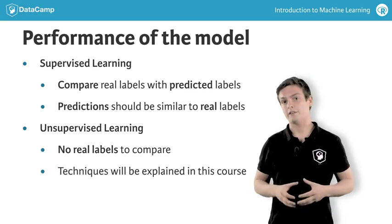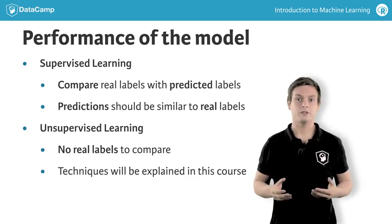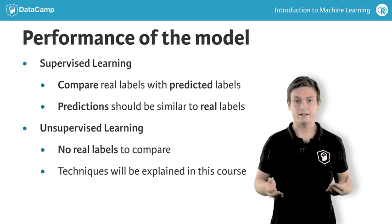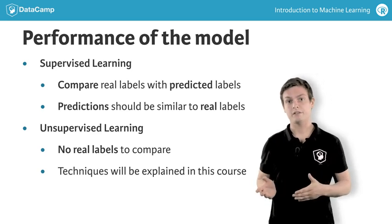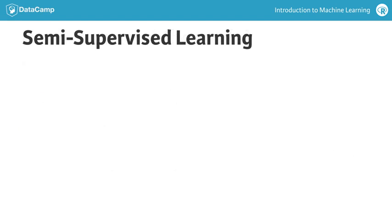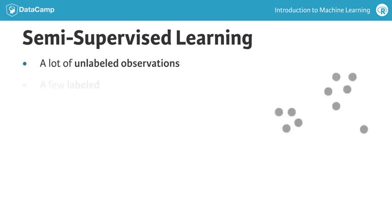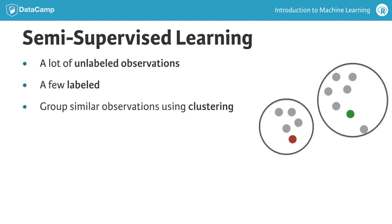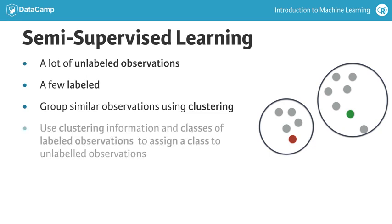As you get more experienced as a data scientist, you might notice that things aren't always black and white. In machine learning, some techniques overlap between supervised and unsupervised learning. With semi-supervised learning, for example, you can have a lot of observations which are not labeled and a few which are. You can then first perform clustering to group all observations which are similar. Afterwards, you can use information about the clusters and about a few labeled observations to assign a class to unlabeled observations.